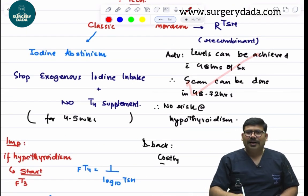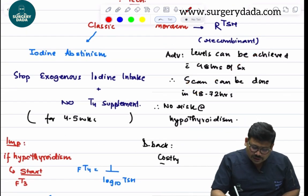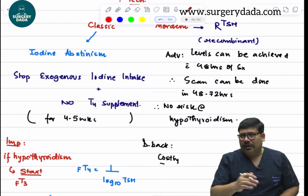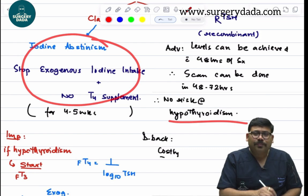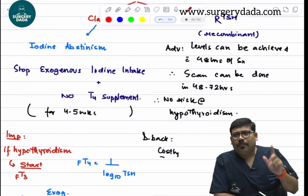The advantage is within 48 hours we achieve the target levels, but remember the cost is very high. The advantage is no risk of hypothyroidism. But the classic one is that we need to abstain everything from iodine, and that is why pre-operative CT and MRI is not done in case of papillary or follicular carcinomas.